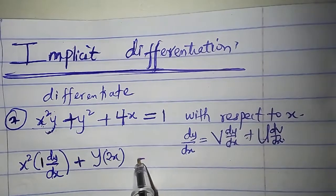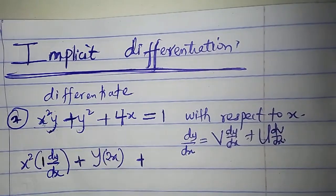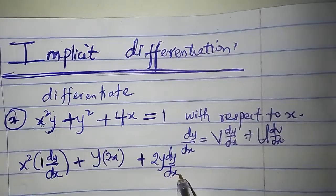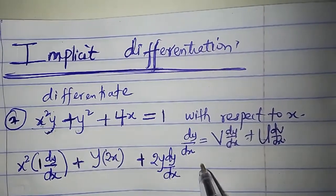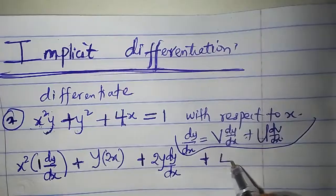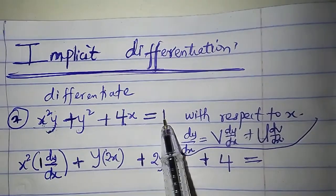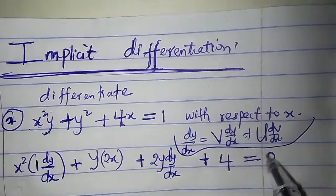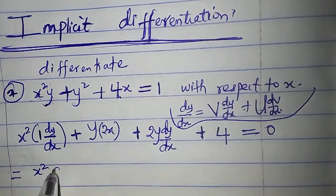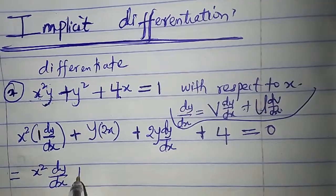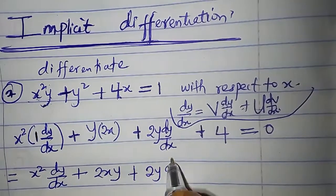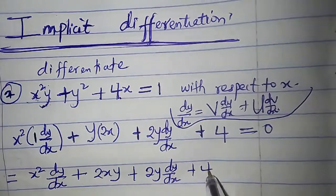Now differentiate y squared. That gives 2y, and we multiply it by dy/dx. Then differentiate 4x to get 4, and differentiate 1 to get 0. So we have x squared times dy/dx, plus 2xy, plus 2y dy/dx, plus 4 equal to 0.